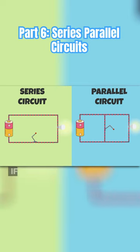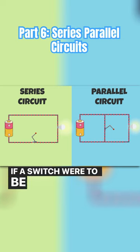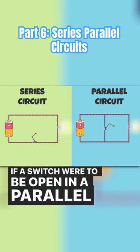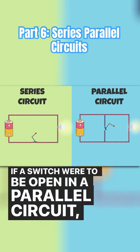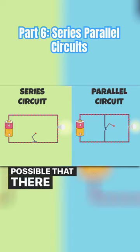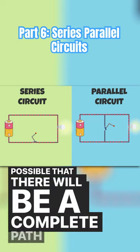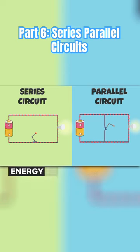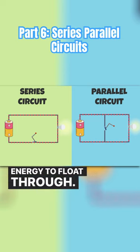A parallel circuit has multiple paths for energy to flow through. If a switch were to be opened in a parallel circuit, it is possible that there will still be a complete path for electric energy to flow through.